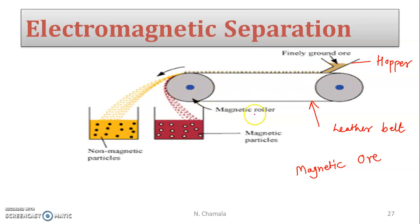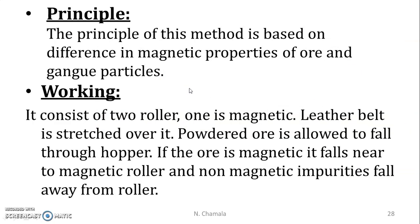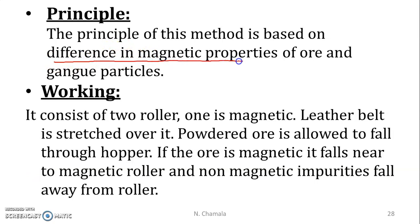In the electromagnetic separation setup, there are two rollers with a leather belt stretched over them and a hopper to feed the fine powdered ore. We need to separate magnetic particles from non-magnetic particles. Since one roller is magnetic, the magnetic particles will stick near the magnetic roller and form a heap there. The non-magnetic particles will fall away from that roller. The principle of this method is based on the difference in magnetic properties of ore and gangue particles.